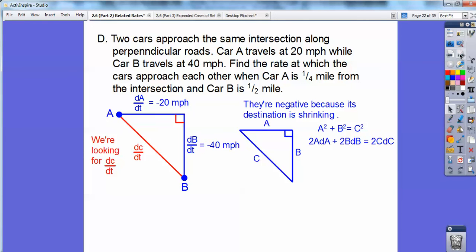And it's asking to find the rate at which the cars are approaching each other. So if this is C right here, I'm looking for DC right here. Because as I'm going this way and going this way, the cars are approaching each other with this red line right here. Again, the Pythagorean Theorem. A squared plus B squared equals C squared.